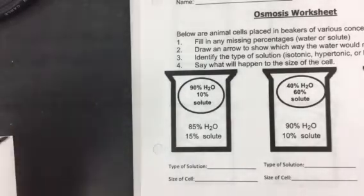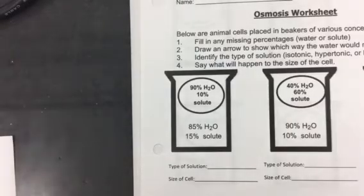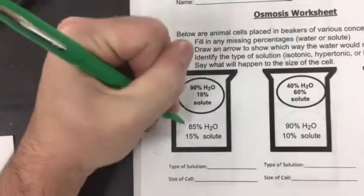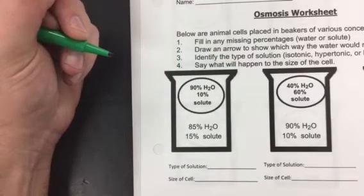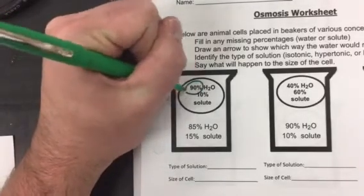Now what you're going to want to do is figure out where the... we don't care about the solute, I mean we do, but we care more about the water. So you find where the water is more and you circle it. Where's the water more? Inside. So I circle that.